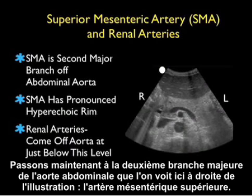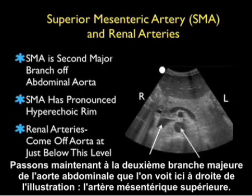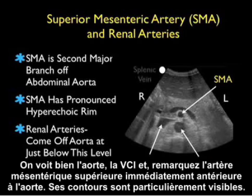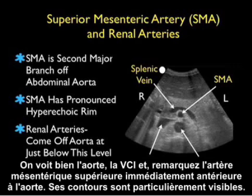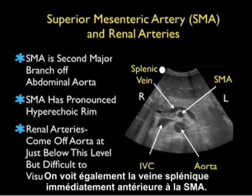Now let's move on to the second major branch of the abdominal aorta: the superior mesenteric artery, as shown in the pictorial. We see the aorta and IVC, and notice the superior mesenteric artery just anterior to the aorta with a pronounced bright or hyperechoic rim. We also see the splenic vein arching just anterior to the SMA.